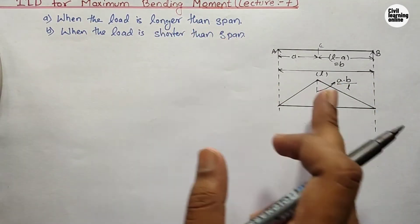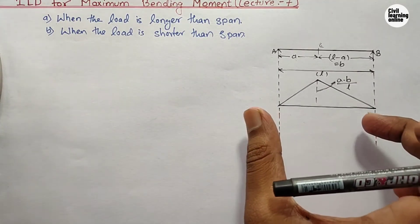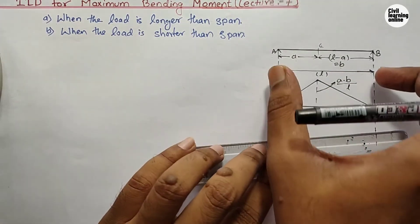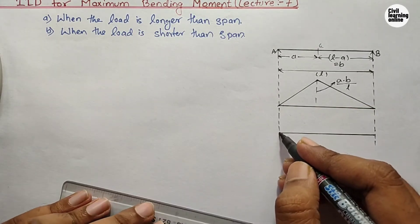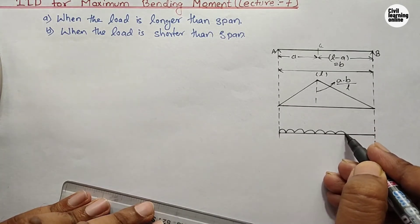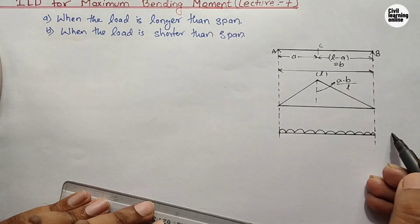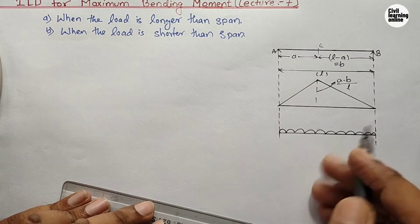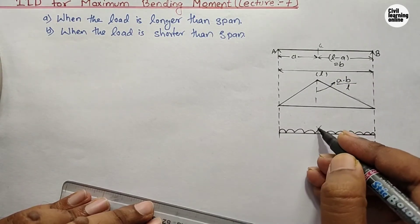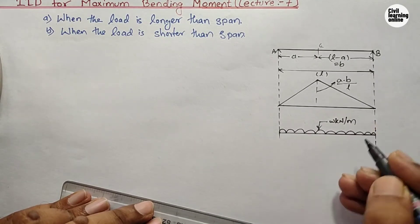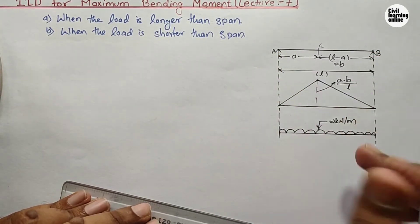Since the UDL is longer than the span, the entire span AB will be completely loaded by the UDL. The load can extend beyond the span on either side, but we only consider the portion equal to the girder span L. So suppose the UDL intensity is w kN/m — we consider the portion of UDL equal to the span of the girder, which is L.